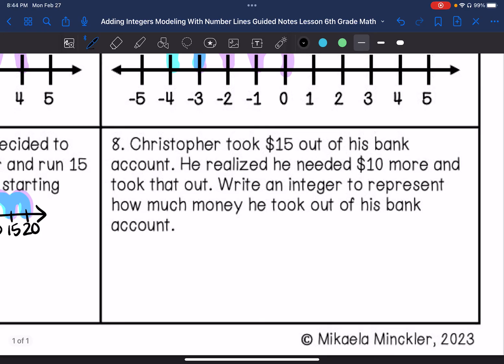Number eight: Christopher took $15 out of his bank account. He realized he needed $10 more and took that out. Write an integer that represents how much money he took out of his bank account. So if I were to write this, taking money out is kind of subtracting money from your bank account. So he took 15 out and then he also took 10 out.